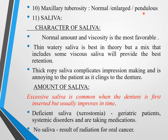Coming to the maxillary tuberosity: these can be normal or enlarged pendulous (hanging tuberosity). Saliva is very important in denture retention — without saliva there is no retention, as it forms a seal between the denture and palate. Normal viscosity is favorable; thin watery saliva is best in theory, but a mix that includes some viscous saliva provides best retention. Thick ropey saliva complicates impression making.